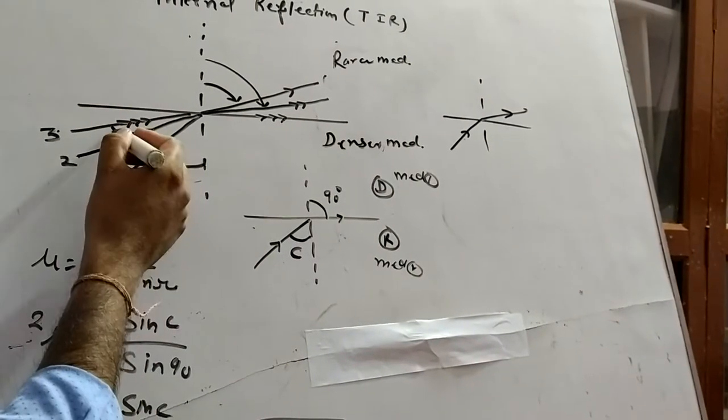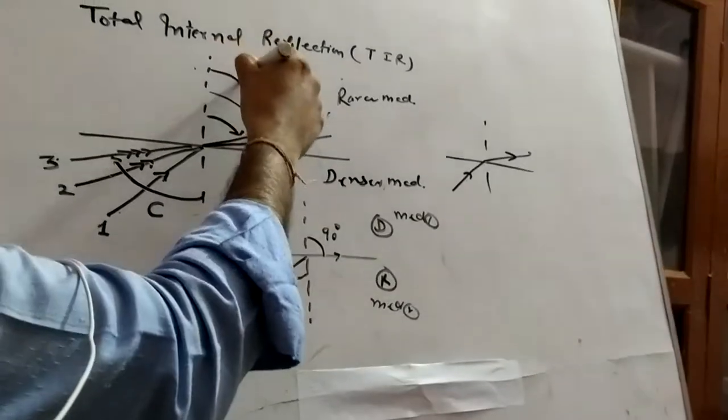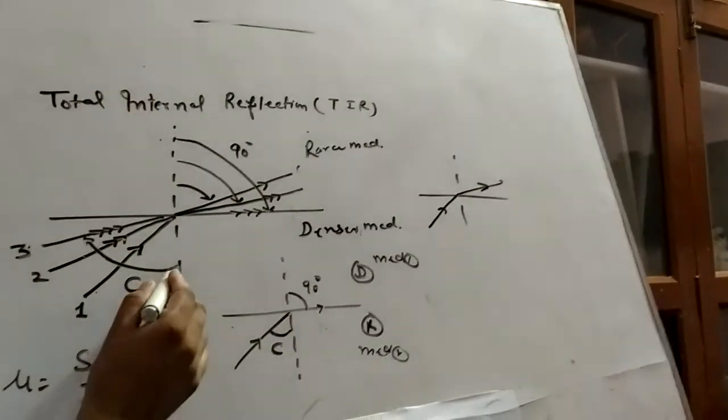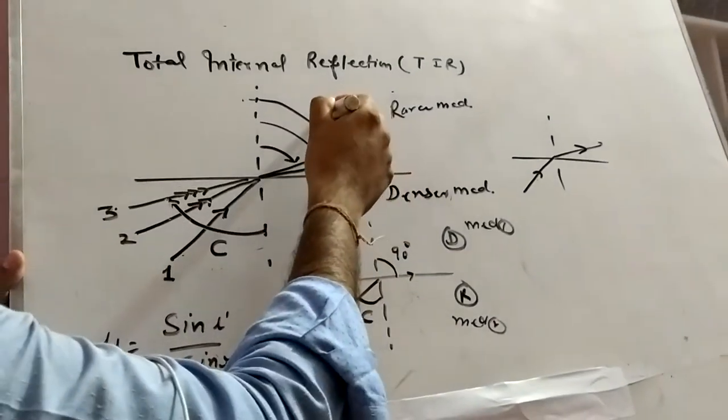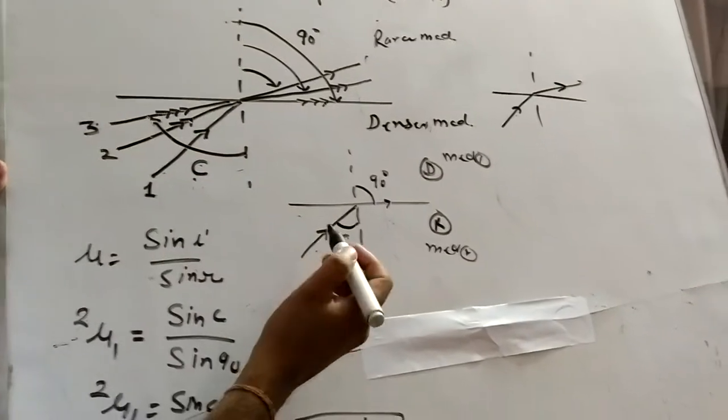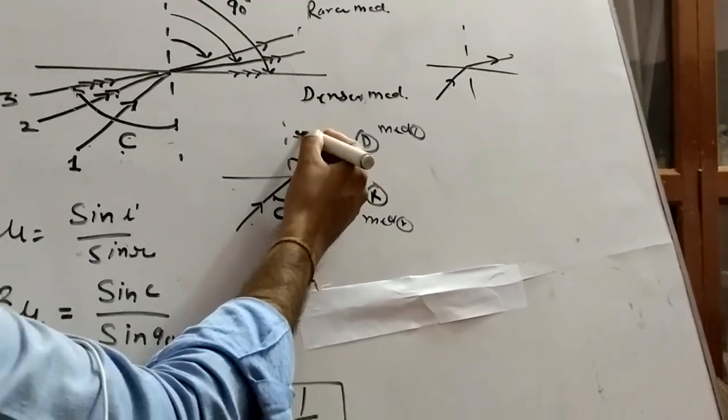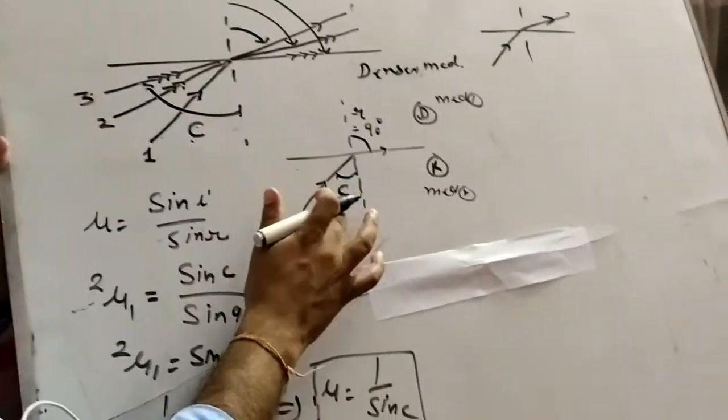If we increase the incidence angle again, it will bend at 90 degrees. And this incidence angle for which the angle of refraction is 90 degrees is known as the critical angle.